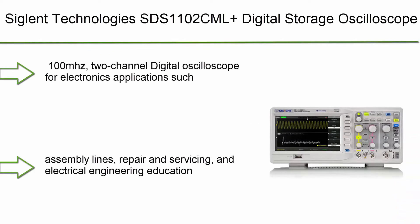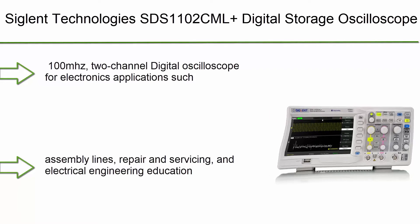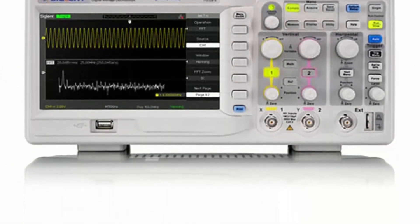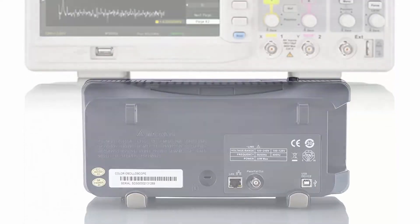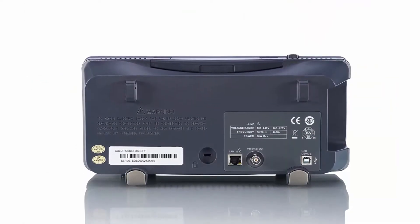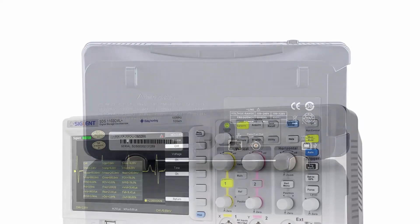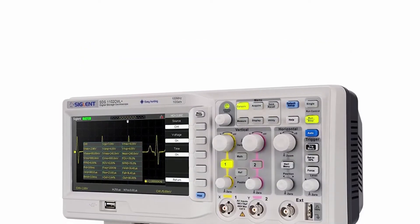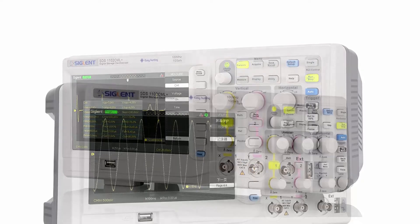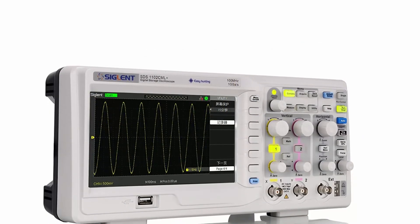Top 2: Siglent Technologies SDS-1102CML+ Digital Storage Oscilloscope — 100 MHz. 100 MHz 2-Channel digital oscilloscope for electronics applications such as product design, assembly lines, repair and servicing, and electrical engineering education. Trigger types include edge, pulse, video, slope, and alternative.